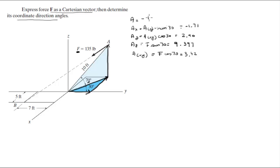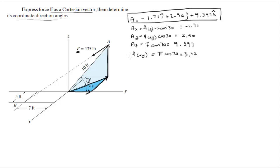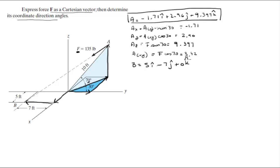So now we have position vector A as negative 1.71i plus 2.96j plus 9.397k. Now let's find B. B is very easy to find. The X component is 5 towards the positive, so 5i. The Y component is 7 in the negative Y direction, so negative 7j, plus 0k. B was straightforward.